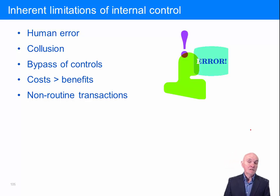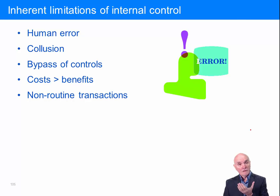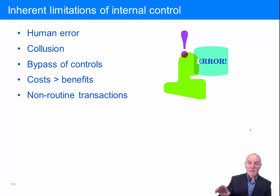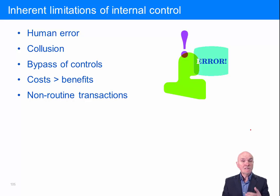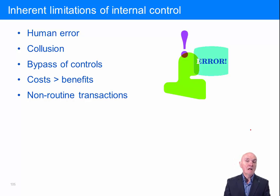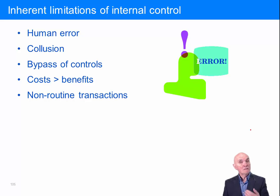Bypass of controls is sometimes done for noble purposes. Say I had forgotten to order some goods and we see raw materials are very low in the warehouse — tomorrow we're going to run out, the production line will stop, people will waste time, and we'll disappoint customers. So instead of going through the proper authorization procedures, I just phone up the supplier and say we're in an emergency, could you quickly supply these goods? So I bypass the controls — very often for good purposes, but once you bypass controls there's a possibility of errors being introduced.